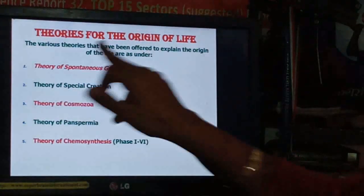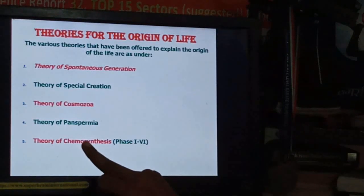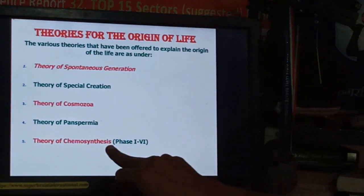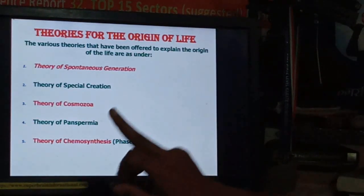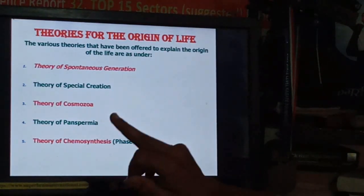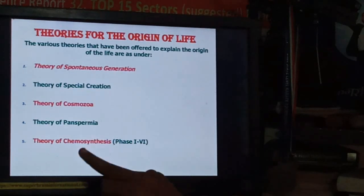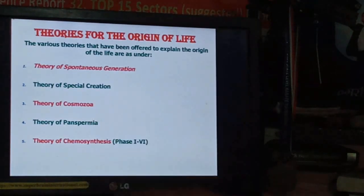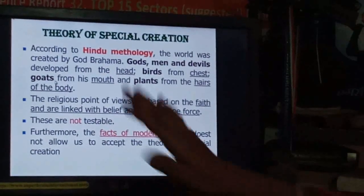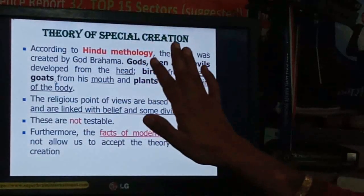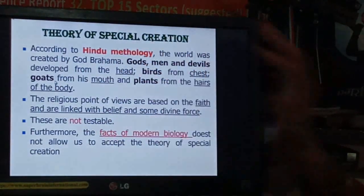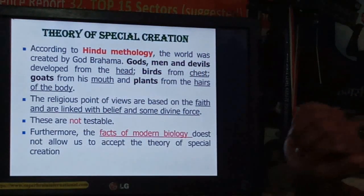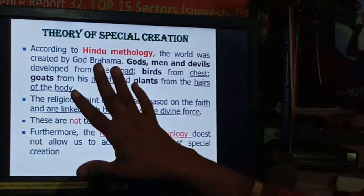The theories include: the theory of special creation, the theory of spontaneous generation, the theory of panspermia or cosmozoa — both are the same — and the theory of chemosynthesis. Among all these, the theory of chemosynthesis or theory of chemical evolution is the one which was accepted. Now we will see each theory one by one, starting with the theory of special creation.